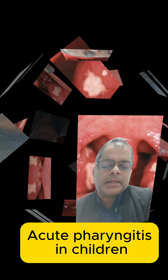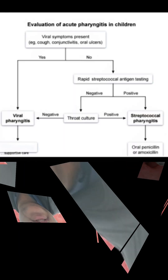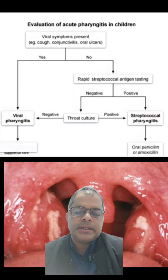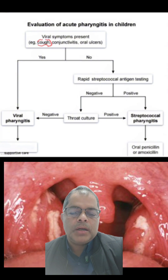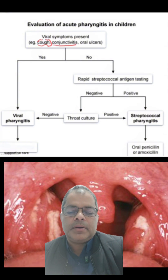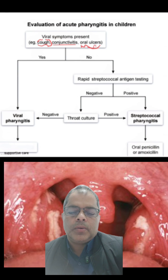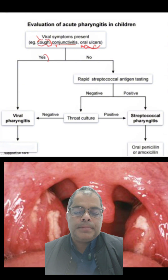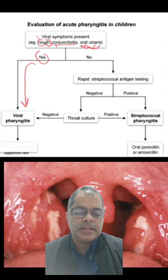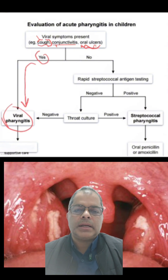It's important to know acute pharyngitis especially in children. These are the viral symptoms present in a child. The symptoms include cough, conjunctivitis, or oral ulcer. If cough is present, conjunctivitis is present, or oral ulcer is present, then this is viral pharyngitis.